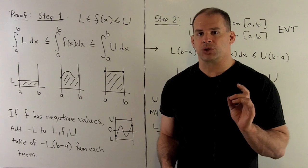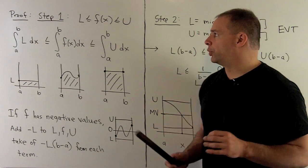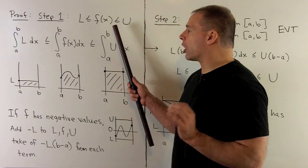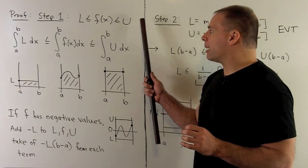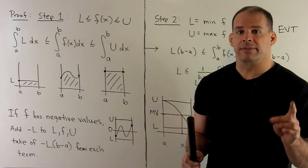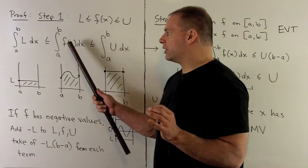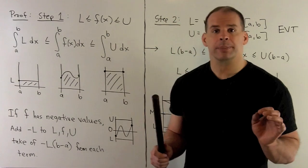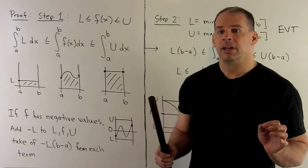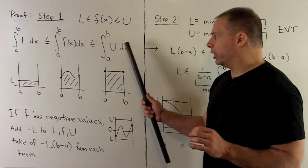To see why the mean value theorem is true, first show the following result. So, we're going to assume the values of f all between capital L and capital U. So, we have a lower bound and an upper bound for the values of f. Now, if that's true, take a definite integral from a to b of f(x) with respect to x. So, that's our net area. That's going to be between the definite integral for L and the definite integral for U.